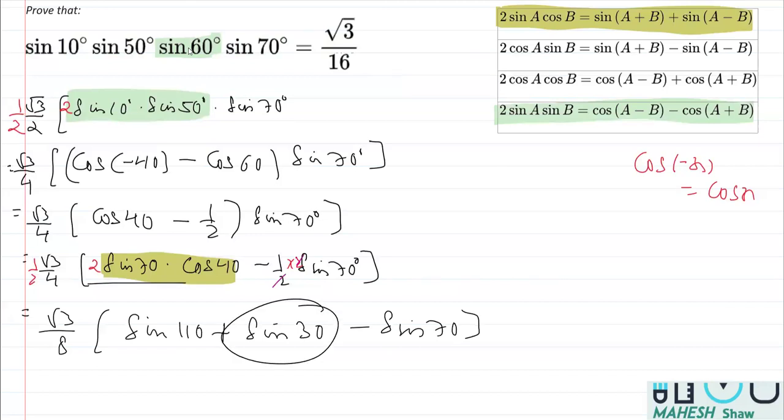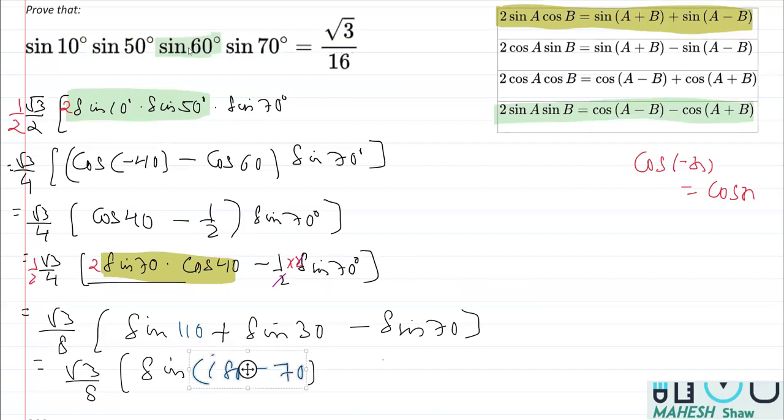Now we can replace this sin 30° with its value that is half. So this is √3 by 8 times sin 110°. I can write 110° as 180° minus 70°. We did so, so that we can reduce this. And then plus sin 30°, the value of sin 30° is half. So we'll be writing half here minus sin 70°.